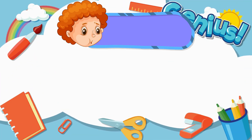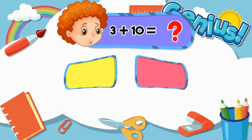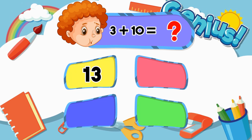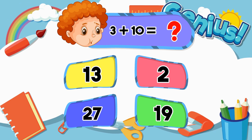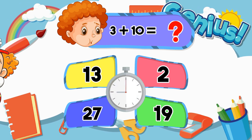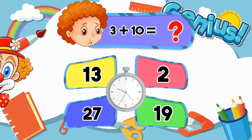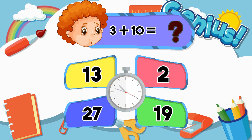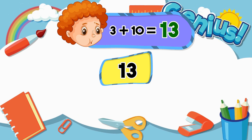What is 3 plus 10? 13, 2, 27, 19. The answer is 13.